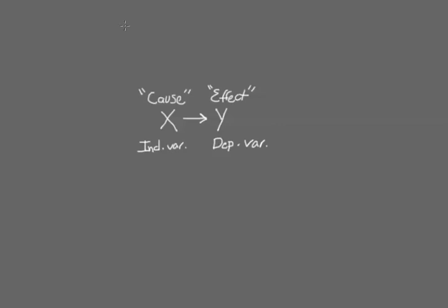Okay, in this video I'm going to show you how to get started on assignment number three, the conceptual part, which is to identify a cause and effect relationship of interest to you and then to theorize about some potential common causes that might be distorting that relationship.